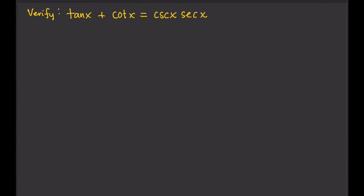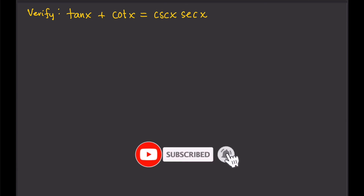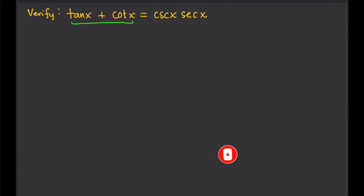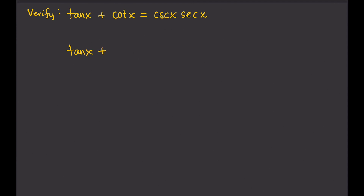Verify the identity: tangent x plus cotangent x equals cosecant x times secant x. To do this, we will start at the left-hand side and use the trigonometric identities that we know to try to transform that into the right-hand side. So we begin with tangent x plus cotangent x.